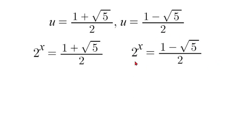So therefore this has no real solution. So it leaves us with one option. We have 2 to the power of x is equal to 1 plus square root of 5 over 2.